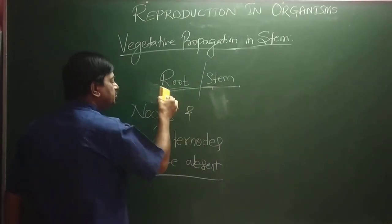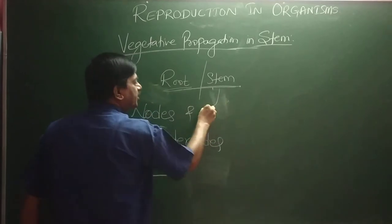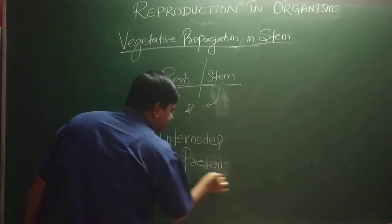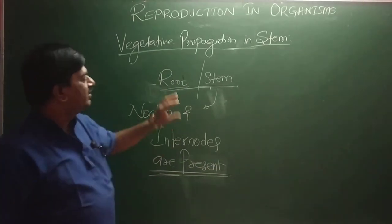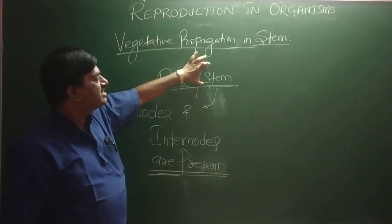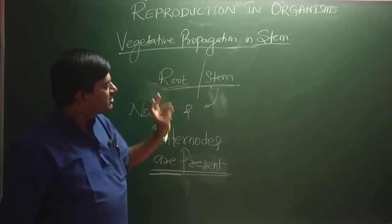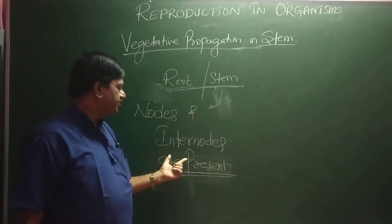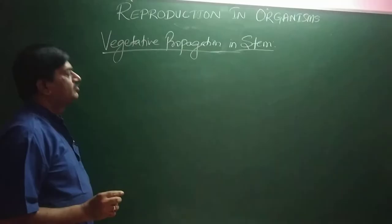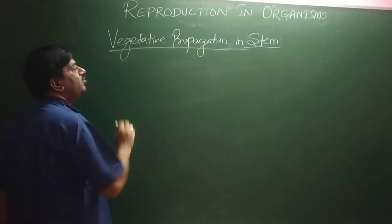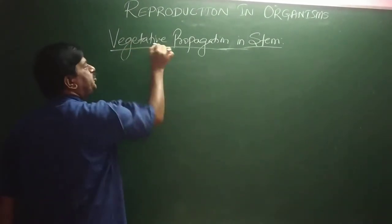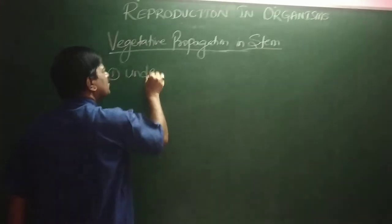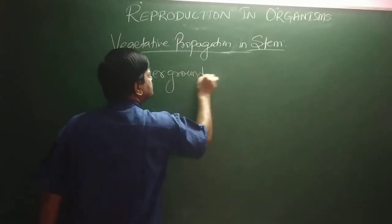When we talk about roots, nodes and internodes are absent. But when we talk about the stem, nodes and internodes are present. By seeing the nodes and internodes, we can identify the type of stem. We are discussing three types of stem: underground stem, sub-aerial stem, and aerial stem. Now, vegetative propagation in stem is classified into three types — the first is called underground stem.